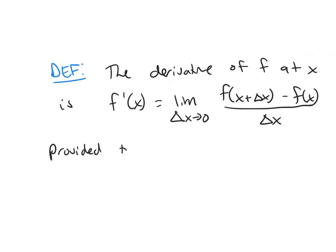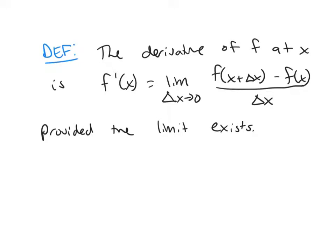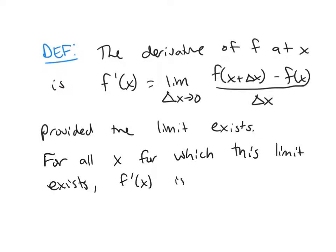Provided the limit exists. And so this derivative, it's actually a function. And so for all x for which this limit exists, f prime of x is a function of x.